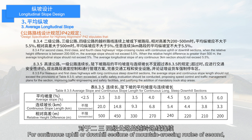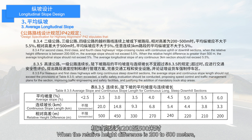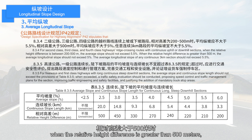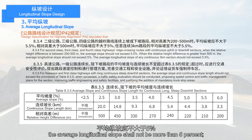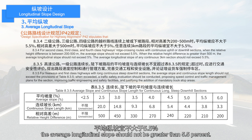For continuous uphill or downhill sections of mountain crossing routes of 2nd, 3rd, and 4th-class highways, the specification stipulates that when the relative height difference is 200 to 500 meters, the average longitudinal slope shall not be greater than 5.5%. When the relative height difference is greater than 500 meters, the average longitudinal slope shall not be more than 5%. For any continuous three-kilometer section, the average longitudinal slope should not be greater than 5.5%.